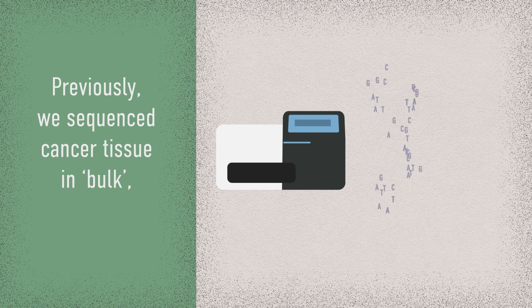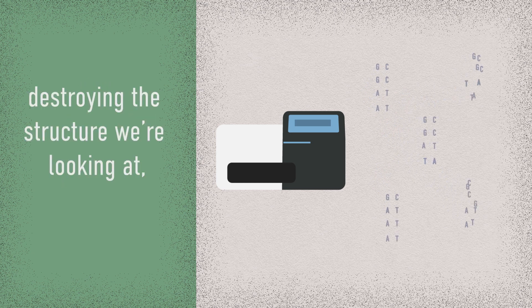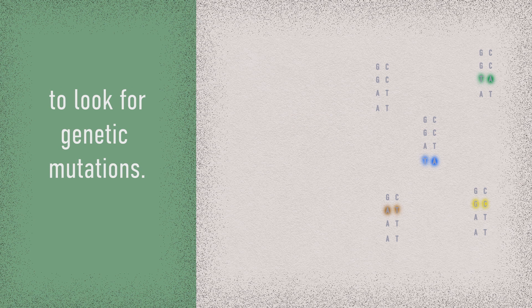Previously, we sequenced cancer tissue in bulk, destroying the structure we're looking at to look for genetic mutations.